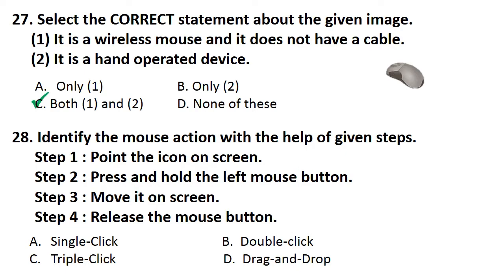Next question, identify the mouse action with the help of given steps. Step number 1, point the icon on screen. Step 2, press and hold the left mouse button. Step 3, move it on screen. Step 4, release the mouse button. Answer is option D. Because drag and drop operation of mouse is used to move an item from one place to another on screen.